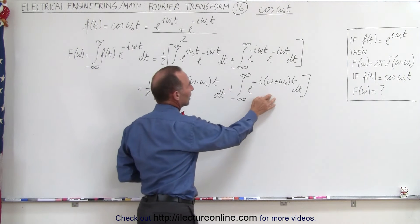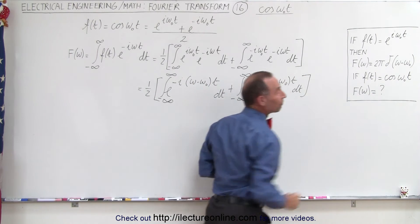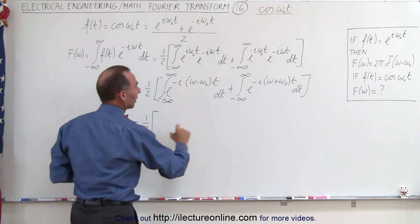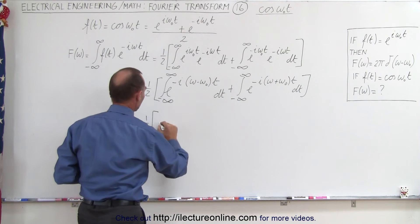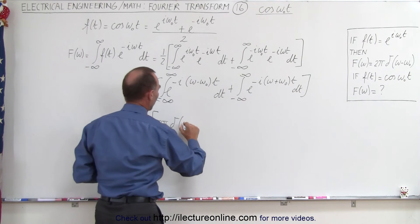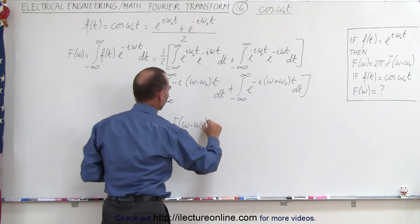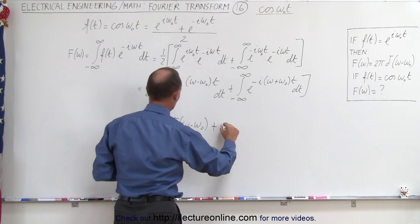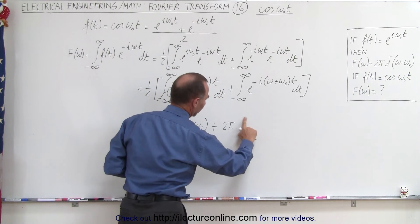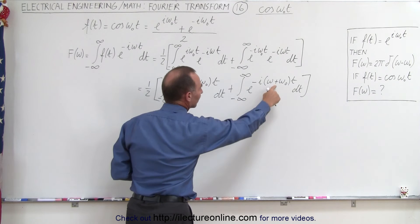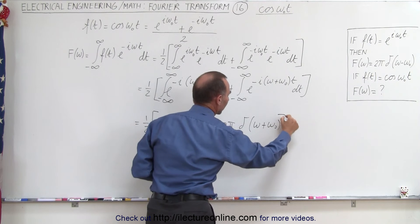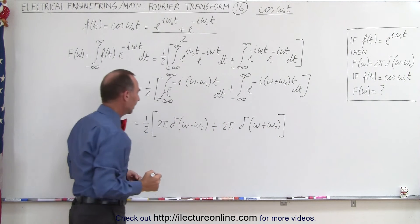This will look like one-half times the first transform, which is 2π times the delta function δ(ω - ω₀), plus 2π times the delta function δ(ω + ω₀).